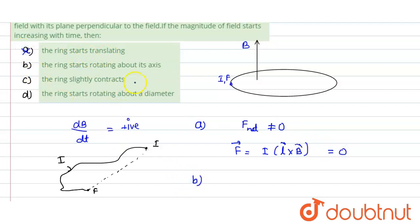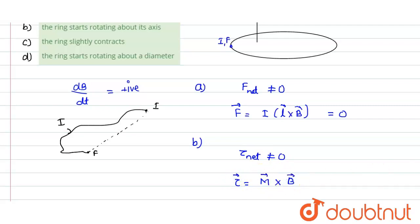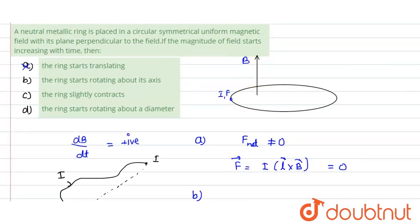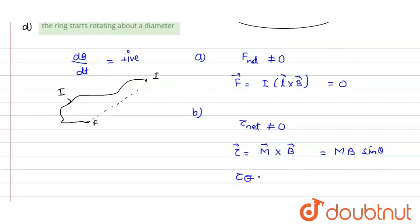Now for option B and D — the ring rotating about its axis or about its diameter — this can only happen if the net torque is not equal to zero. The torque value equals M cross B, or MB sine theta, where theta is the angle between M and B. The magnetic field B is in the upward direction. The magnetic moment M is perpendicular to the plane of the ring — also in the upward direction. So theta equals zero, and sine zero is zero, meaning torque equals zero.